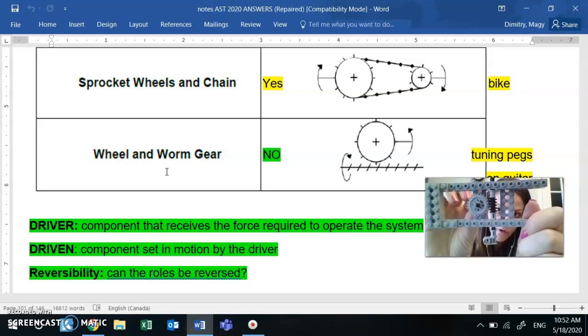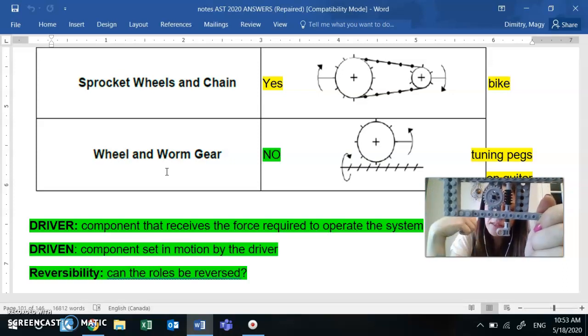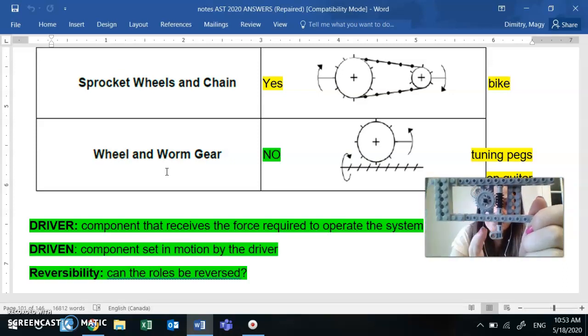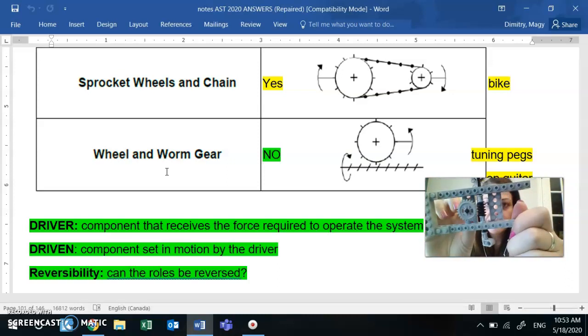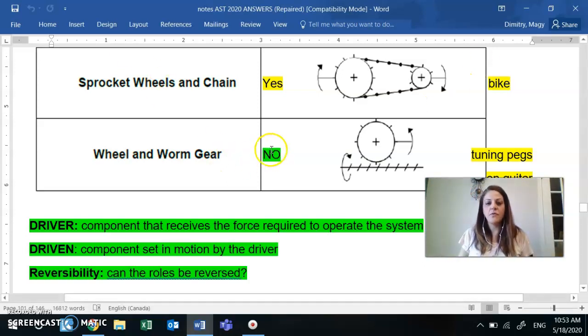Because of the worm, the way it's made, it's like a helical movement. The way it's made is that it's made only to spin in one direction. So that's why it gets jammed like that. So out of all of the whole gang of systems, the one that you can memorize is the non-reversible one is the wheel and worm gear. That's the only one that you'll need to remember.